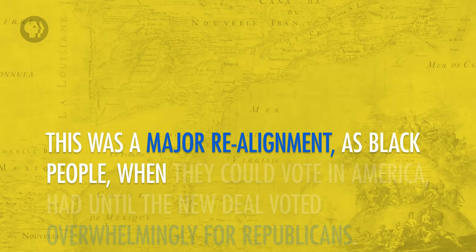This was a major realignment, as black people, when they could vote in America, had until the New Deal voted overwhelmingly for Republicans. And even though New Deal programs did very little for black people — the programs were often quite discriminatory — the impression that the Democrats and FDR were champions of the poor helped convince many African-Americans to vote Democrat, and they remain one of the most consistent groups in terms of their party affiliation. The coalition of groups that make up the Democratic Party, sometimes called the New Deal Coalition, has been pretty stable for quite some time, as has the coalition that makes up the Republican Party. This is why some people suggest that there have only been five party systems, with the fifth beginning in roughly 1932 and continuing to the present.